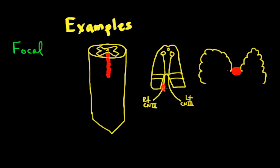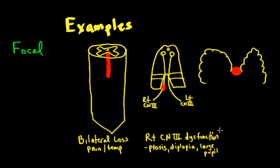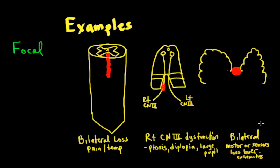All of these lesions are focal, but look at all the different shapes. The first lesion will give me bilateral loss of pain and temperature in whatever segments that spinal cord controls. With a right cranial nerve three lesion, I'll lose right-sided CN III function — causing ptosis, diplopia due to effects on extraocular muscles, the eye being pulled out, and a large, poorly reactive pupil. The third lesion will give me bilateral loss of motor or sensory function in the lower extremities because of the homunculus — medial parts control the lower extremities — so weakness if it's in the frontal lobe, or sensory loss if it's in the parietal lobe.